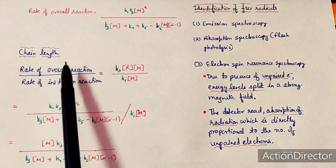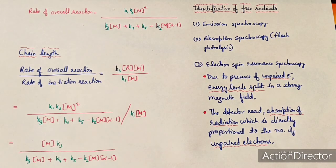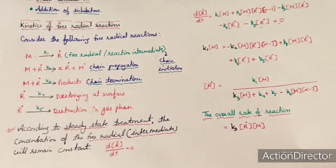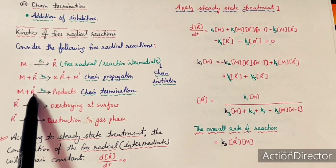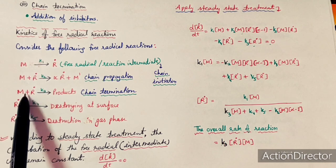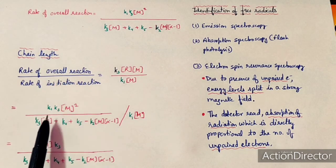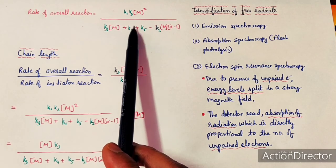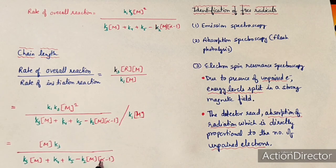One important term is the chain length. Chain length is actually the rate of overall reaction divided by the rate of initiation reaction. The rate of initiation reaction was K1·M. So the chain length equals the overall rate of reaction over the initiation rate, which gives K3·M divided by (K3·M + K4 + K5 − K2·M)^(α−1). This is the chain length for the free radical reaction.